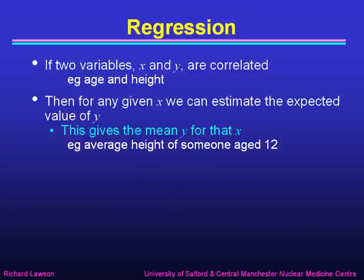If we've got two variables, let's call them x and y, and they're correlated — examples might be age and height — then for any given value of x, we can estimate the expected value of y. This gives the mean value of y for that value of x. For example, if we're talking about age and height, it will be the average height of someone aged 12.